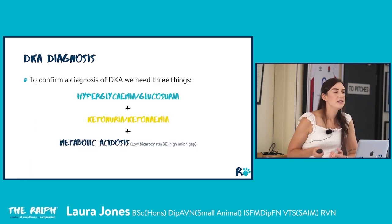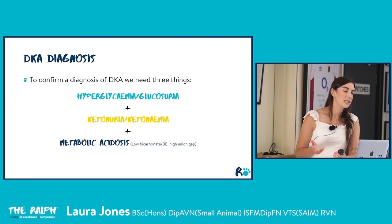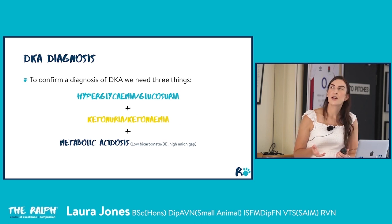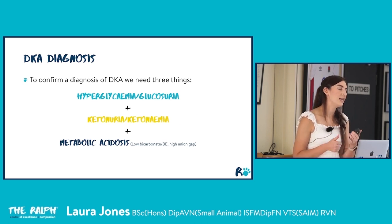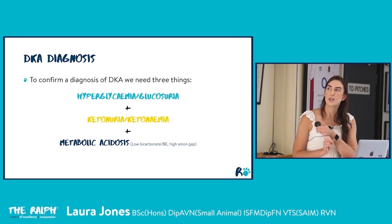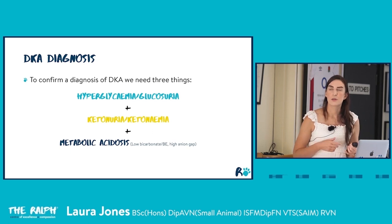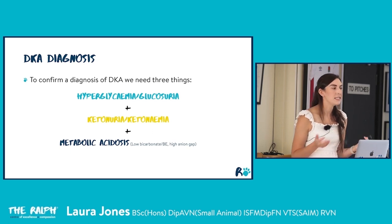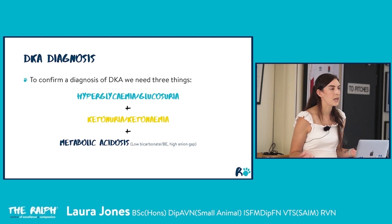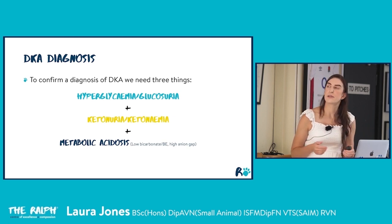Diagnosis of DKA uses the same diagnostic tests already described, but technically to confirm DKA we need three things: elevated glucose, elevated ketones, and metabolic acidosis. We want to perform a venous blood gas and monitor ketone levels to confirm the diagnosis where possible.